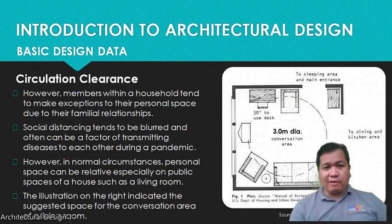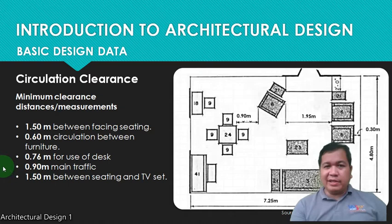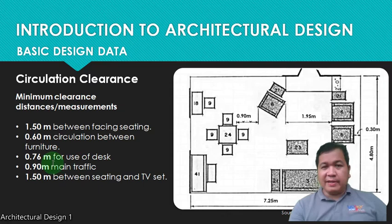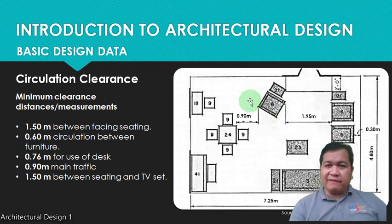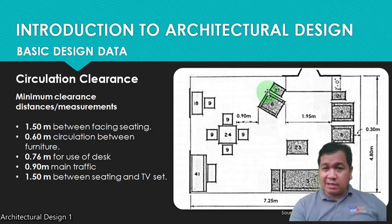Minimum clearance requirements include: 1.5 meters for a facing seating arrangement, 0.60 meters for circulation between furniture, 0.76 meters for use of a desk, 0.90 meters for main traffic, and 1.5 meters between seating and a TV set. You can get the sizes and data of furniture from your books, especially Time Saver Standards for Interior Design, or you can take measurements of existing furniture in your house and study it in relation to the people who are using it.